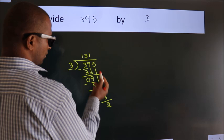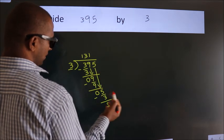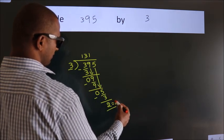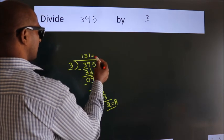After this, no more numbers to bring down. So we stop here. This is our remainder. This is our quotient.